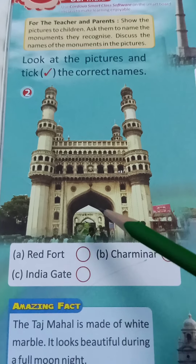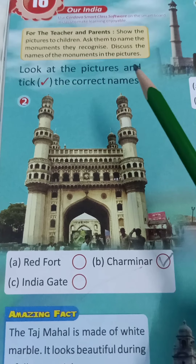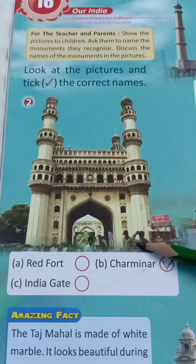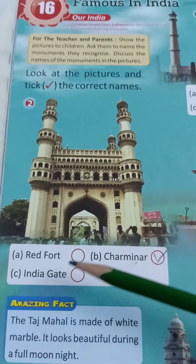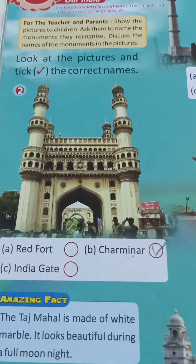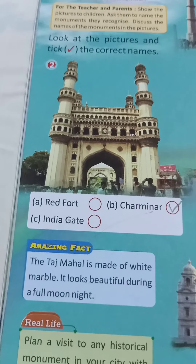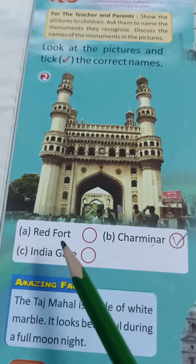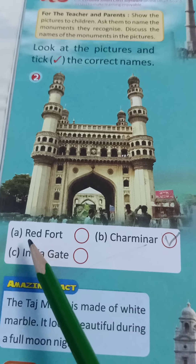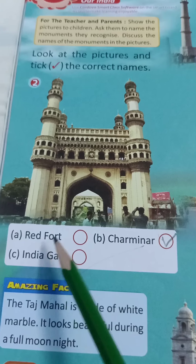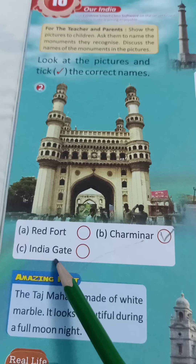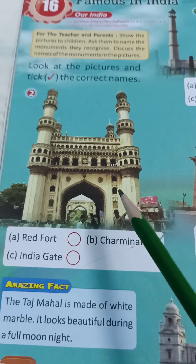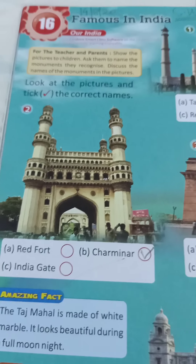Second is this picture — Charminar. See in the options whether it is there or not. Read the spelling. The options are: Red Fort, Charminar, India Gate. So Charminar is there. Put a right tick. This is Charminar.